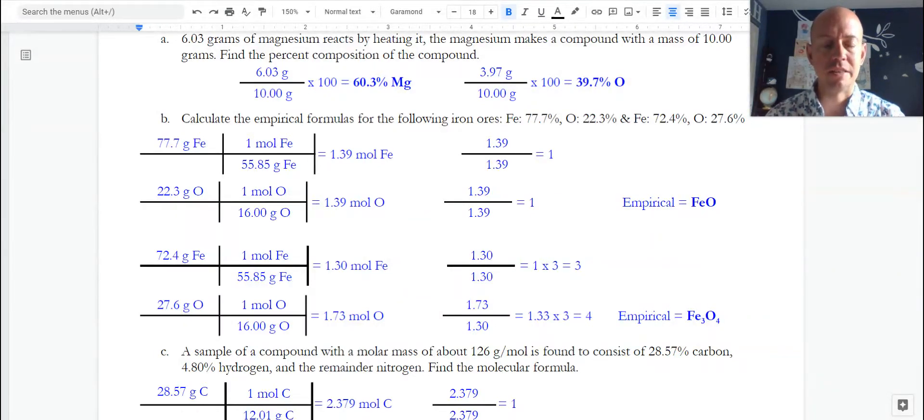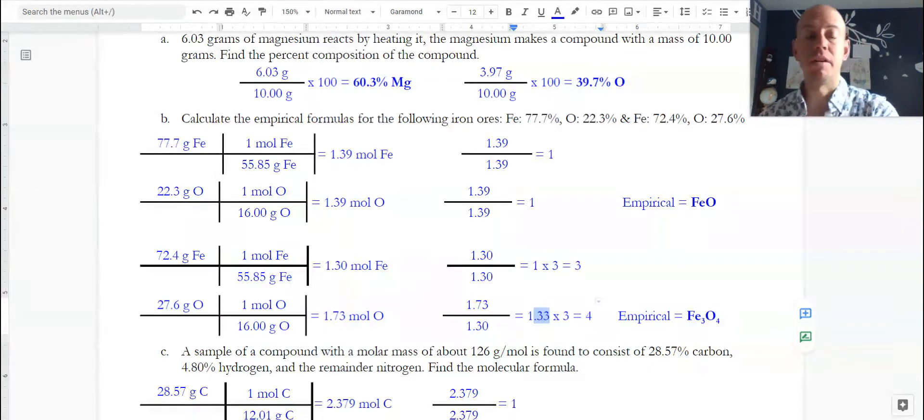So I divide by the smallest, 1.30. That comes out to one, obviously, but that number is 1.33. I cannot put a subscript of 1.33 on my oxygen, and it's not small enough to round down or big enough to round up. So I keep it as that 1.33, but then triple both of these to get them the whole numbers.